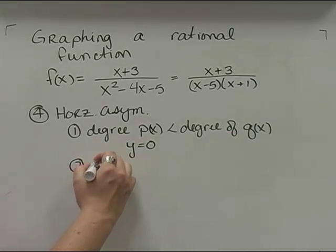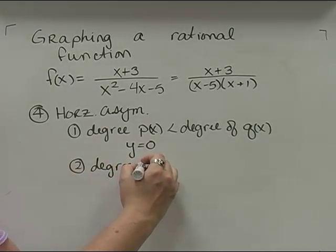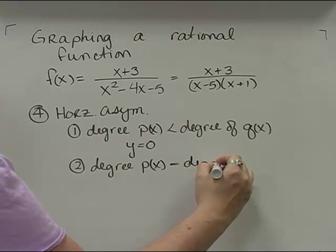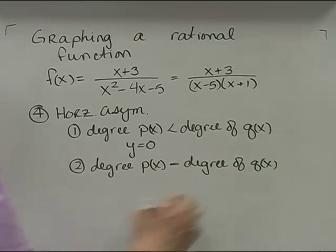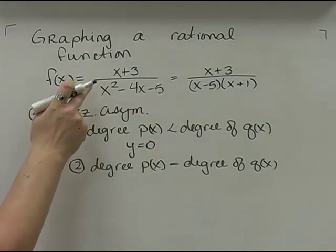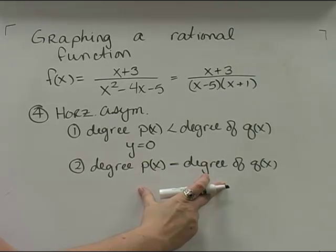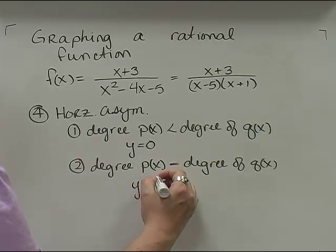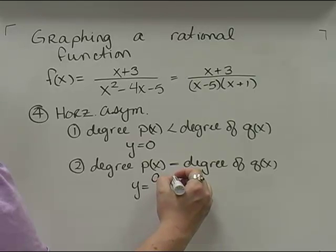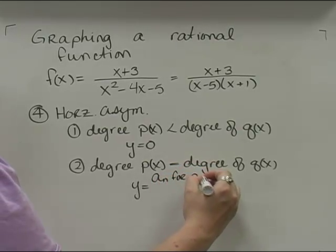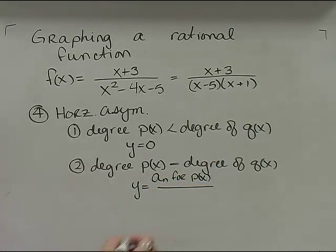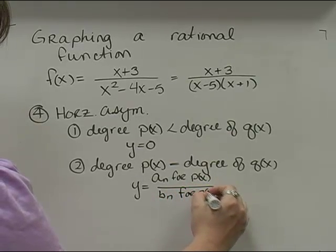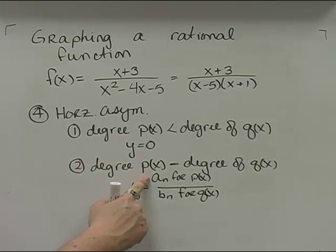The second case is that the degree of the numerator p of x is equal to the degree of the denominator q of x. When both polynomials have the same highest power, then the horizontal asymptote is y equals a-n over b-n — that is, the leading coefficient of p of x divided by the leading coefficient of q of x.